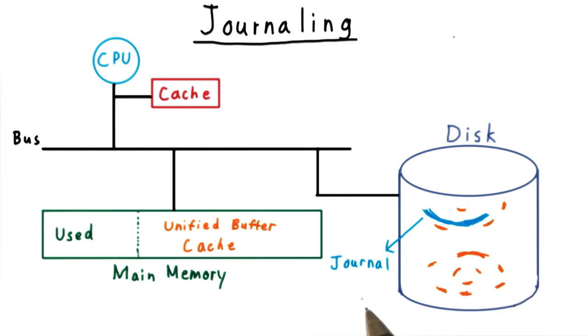The name journal comes from the analogy to a diary that one might write in every day to record the changes in one's life in time sequential order. Here, we're recording the changes to the file system.